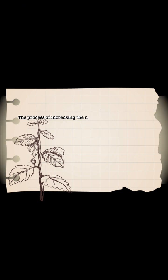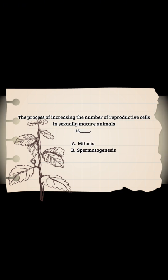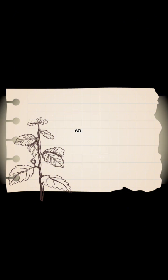The process of increasing the number of reproductive cells in sexually mature animals is: A - mitosis, B - spermatogenesis, C - fertilization, D - gametogenesis. Answer: A - mitosis.